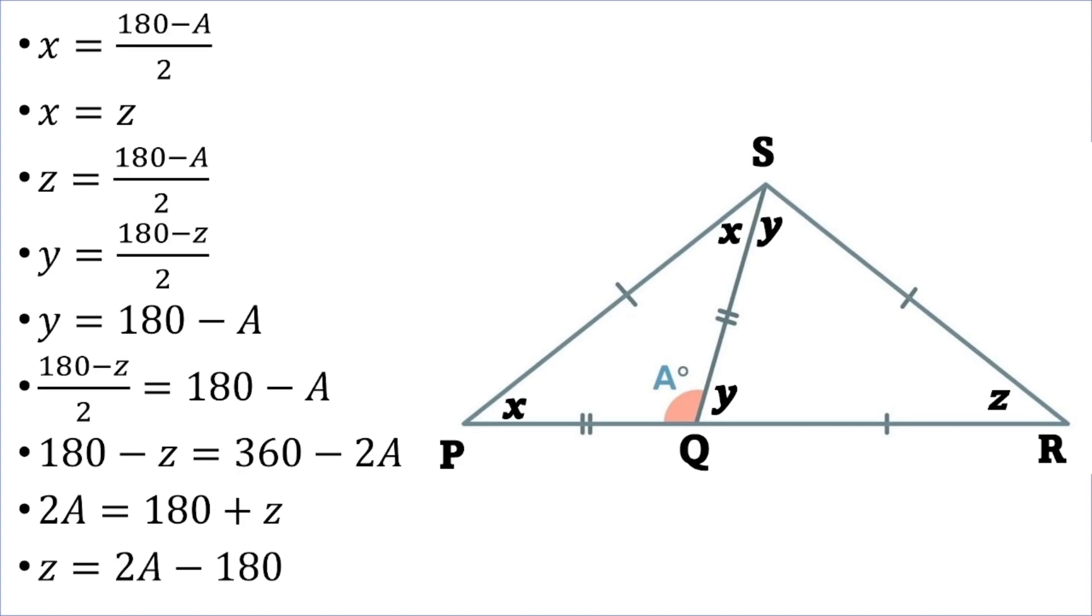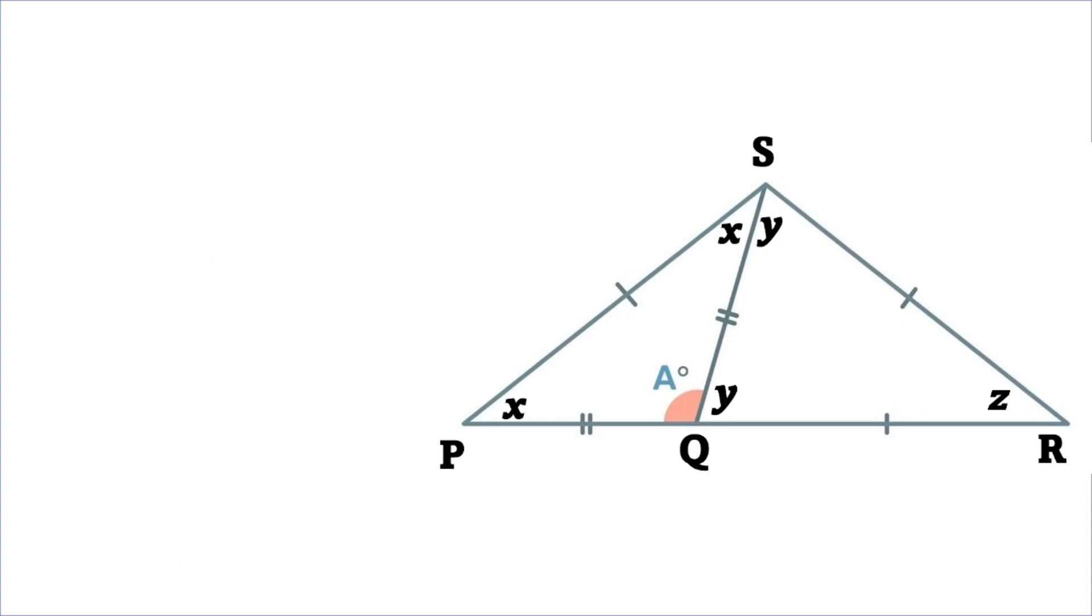So when I look at it, I'll have two equations for Z. I have that Z is equal to 180 minus A over 2, and Z is equal to 2A minus 180. Therefore I can equate those to each other. So 2A minus 180 is equal to 180 minus A over 2.